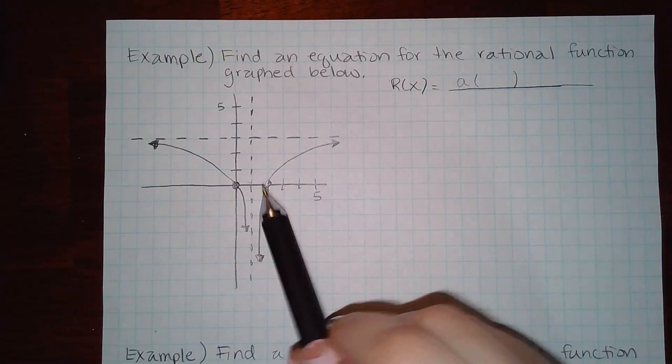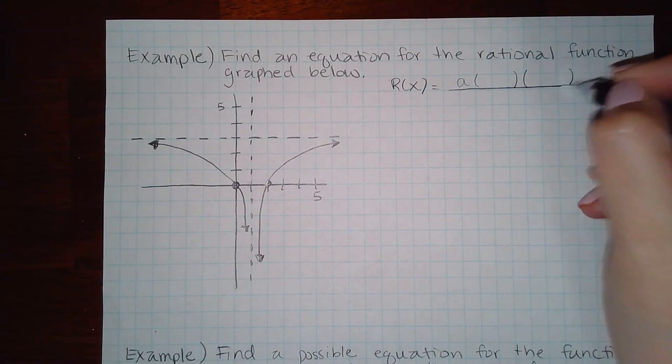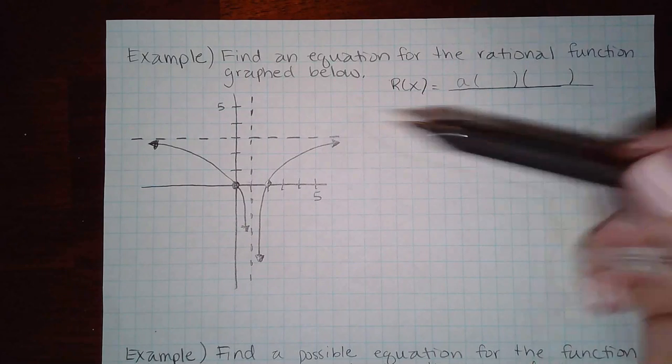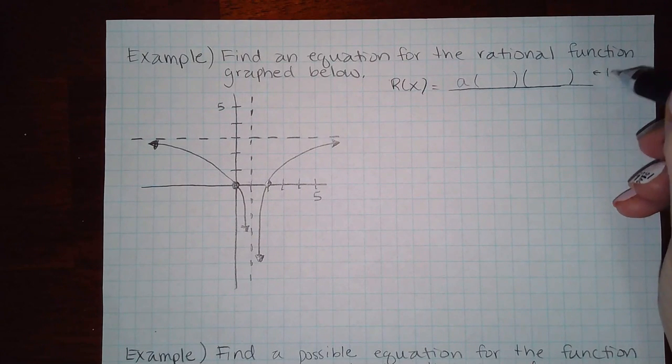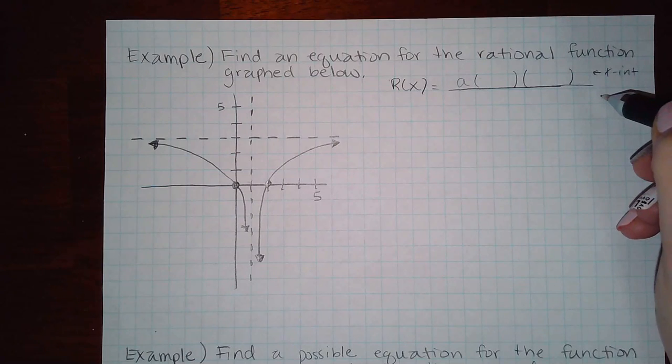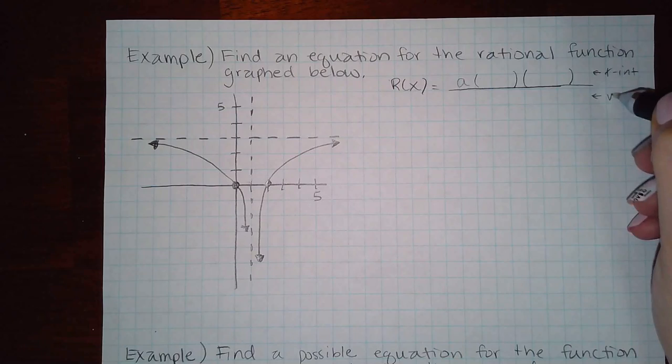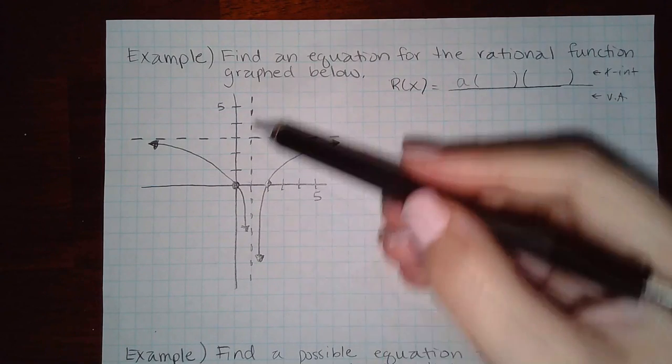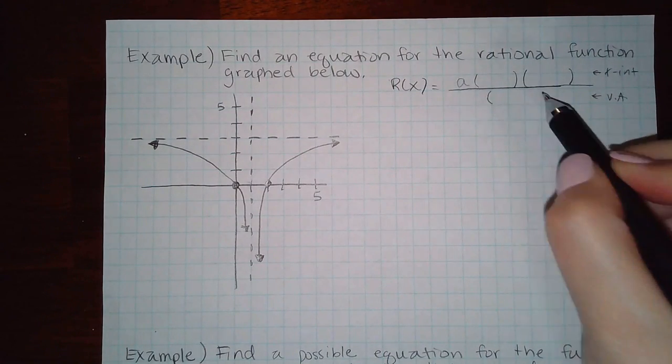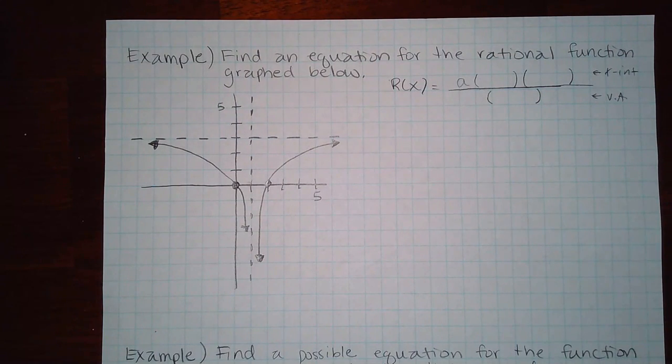Since I have two x-intercepts I should have two parentheses here. Remember this is your x-intercepts, this is going to be your vertical asymptotes, and I have one vertical asymptote so I'm going to have one factor down here.